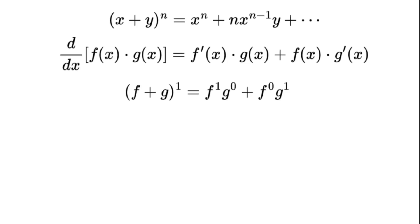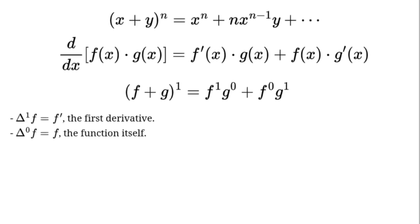Here's the magic. We define delta to the power of n as our operator. So delta to the power of 1 times f equals f prime, the first derivative, and delta to the power of 0 times f equals f, the function itself.